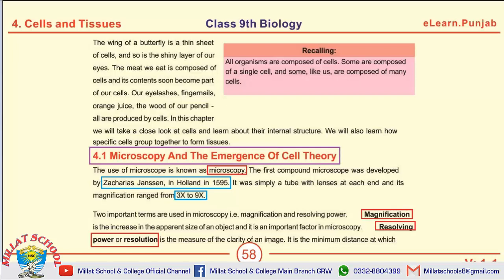Bismillahirrahmanirrahim. Assalamu alaikum. Dear students, class 9th biology. Today we are going to start a new chapter — that is Cells and Tissues, chapter number 4 of your book. Just like in previous chapters we discussed short questions, MCQs, and long questions, similarly in this chapter we will read the short questions, MCQs, and long questions that are selected in examinations. First we look at our first topic: microscopy and the emergence of cell theory.